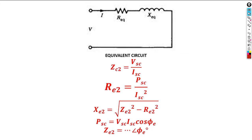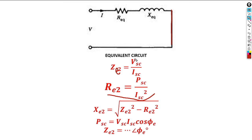For the short circuit test, the equivalent circuit of the transformer is simplified. We determine the equivalent impedance Zeq using Ohm's law: Vsc divided by Isc. The equivalent resistance Req is determined by Psc divided by Isc squared — this is applying the power formula.